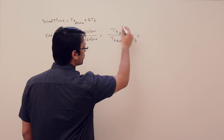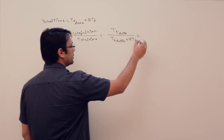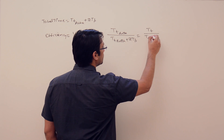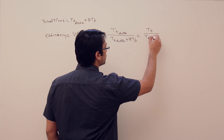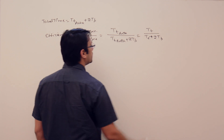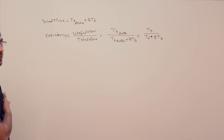I will abbreviate transmission time of data as Tt and propagation time as Tp, so efficiency is Tt upon Tt plus 2 into Tp.